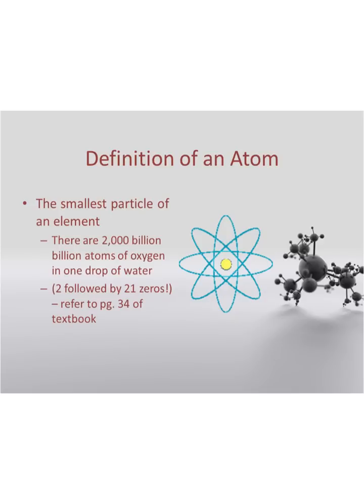To get an idea of how small an atom is: there are 2,000 billion billion atoms of oxygen in just one tiny drop of water — that's 2 followed by 21 zeros. There are a few other analogies in our textbook, so if you want to turn to page 34 and read about some other ways to think about how small an atom is, that would be a good idea, because it's so small we can't see it and we can't even use a microscope to see it.